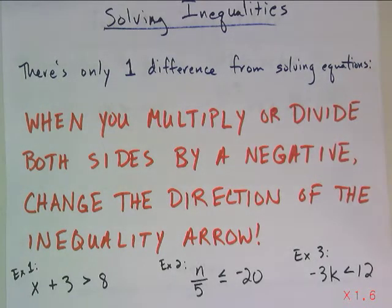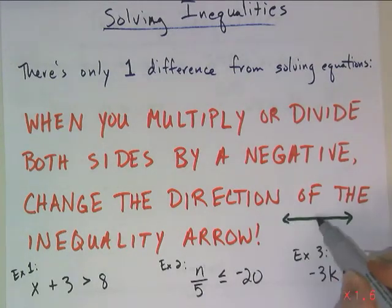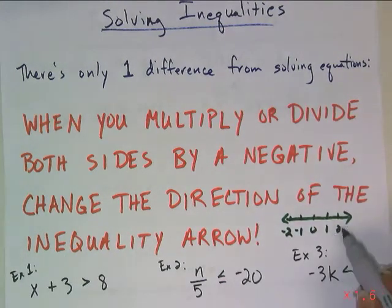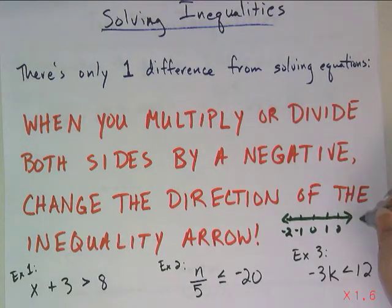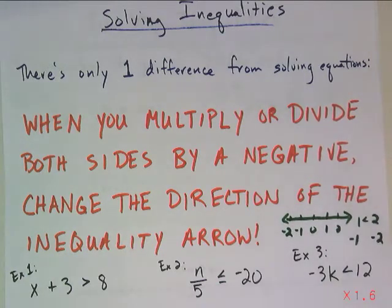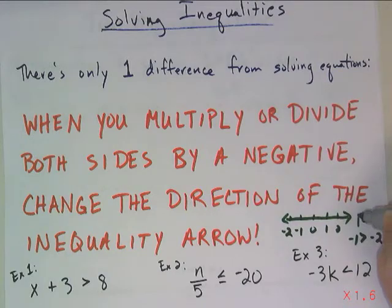A brief explanation as to why: if I look at a number line and compare 1 and 2, clearly 1 is less than 2. But if I compare them to their negatives, negative 1 is actually greater than negative 2. Both numbers got changed to their opposites, and that made the direction of the inequality arrow have to change. This is true for all inequalities.